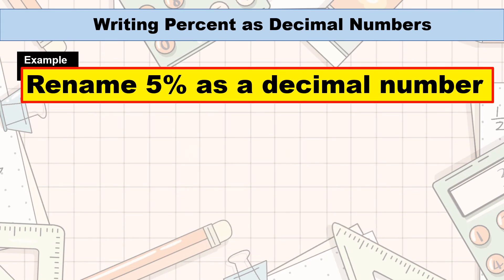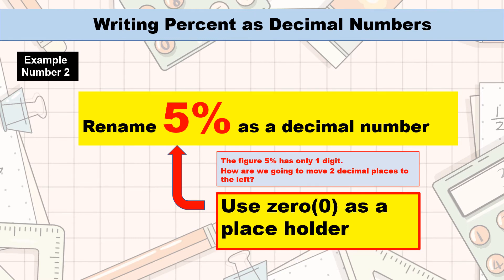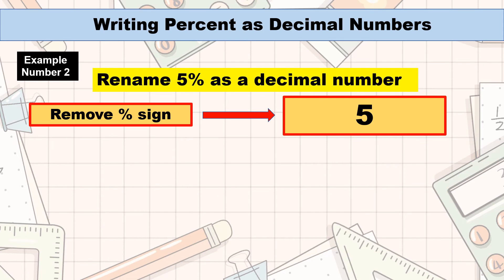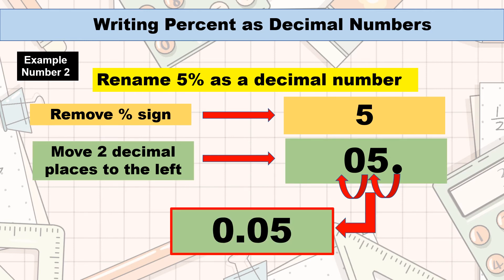Let us have another example. Rename 5% as a decimal number. Remember, the figure 5% has only one digit. How are we going to move two decimal places to the left? Remember, we use 0 as a placeholder. The first thing to do is to remove the percent symbol and retain 5. Next, move two decimal places to the left. The result would be 0.05, or 5 hundredths. Thus, 5% is 0.05 in decimal form.